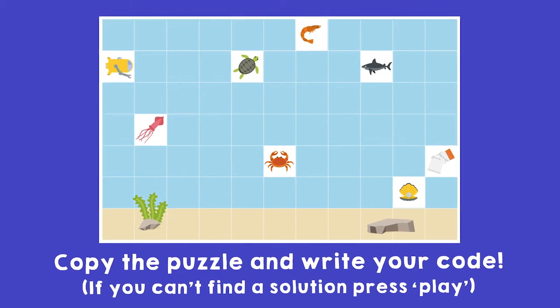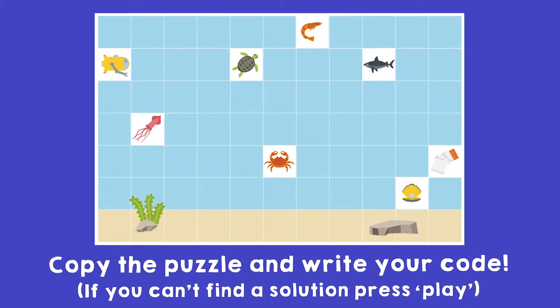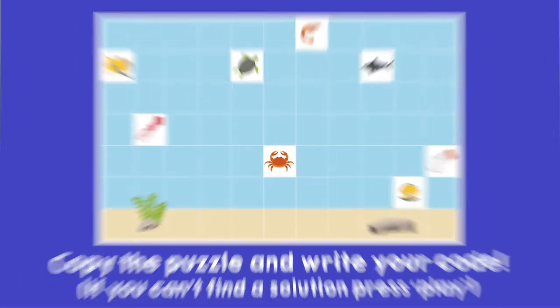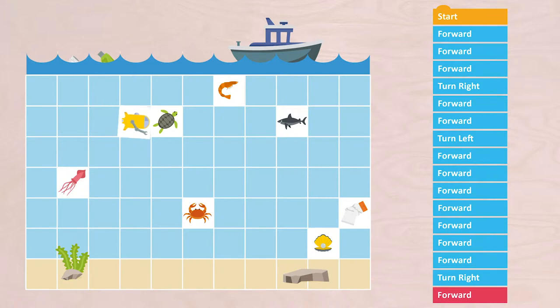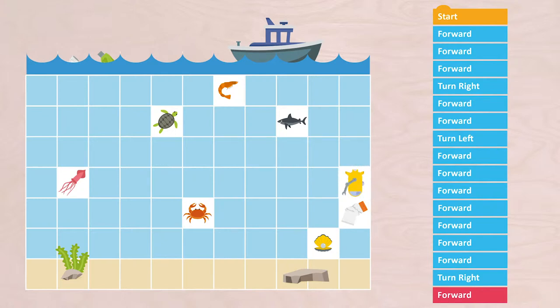Good luck. And did it work? No, right? There are too few forward blocks to write the sequence. The robotic cleaner is just not quite able to reach the plastic. And if you look at the sequence, it is not very efficient to have to say forward all the time.